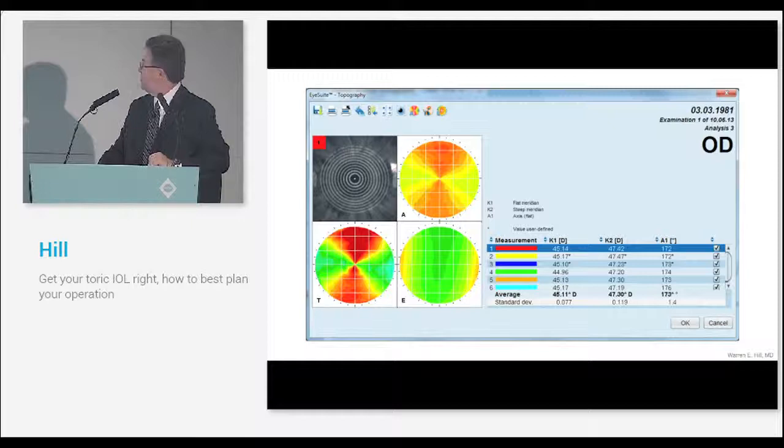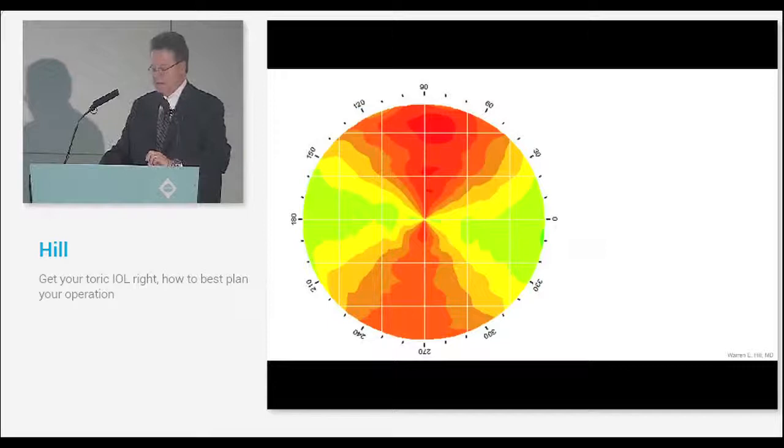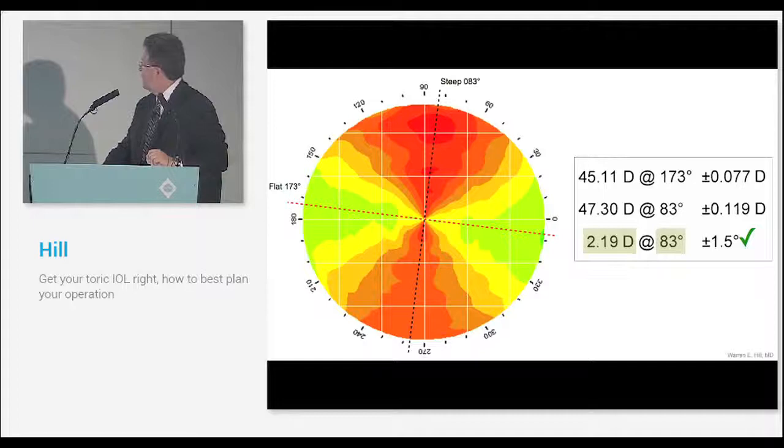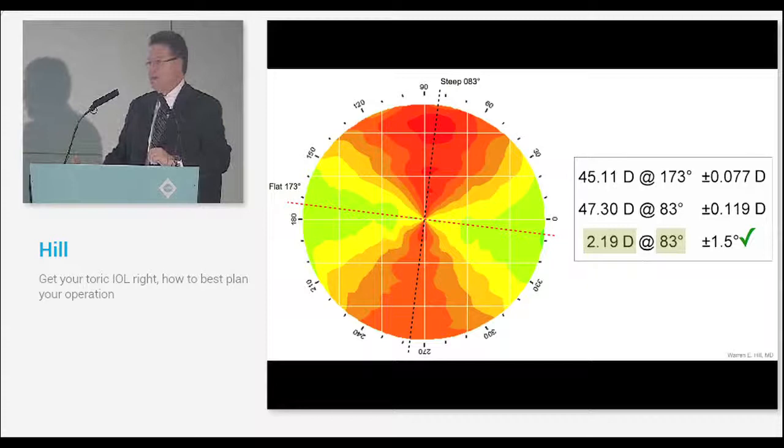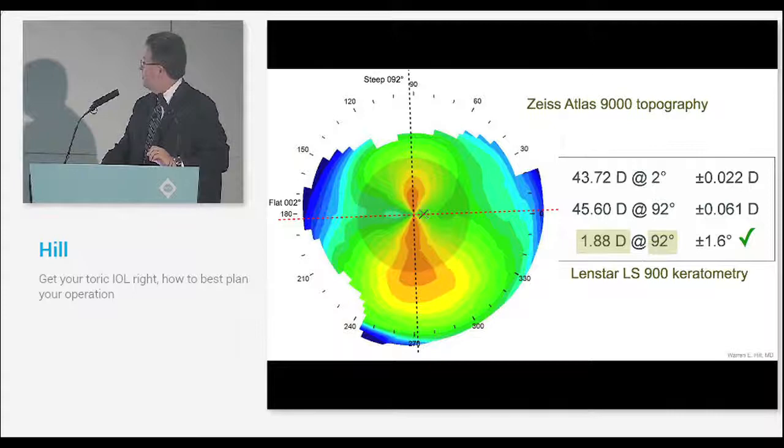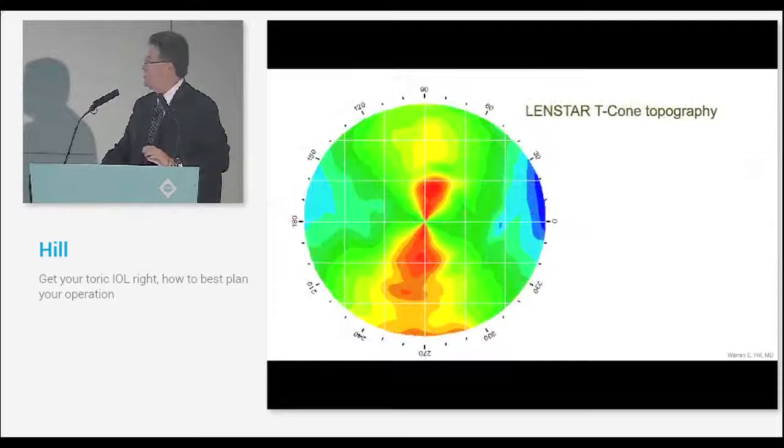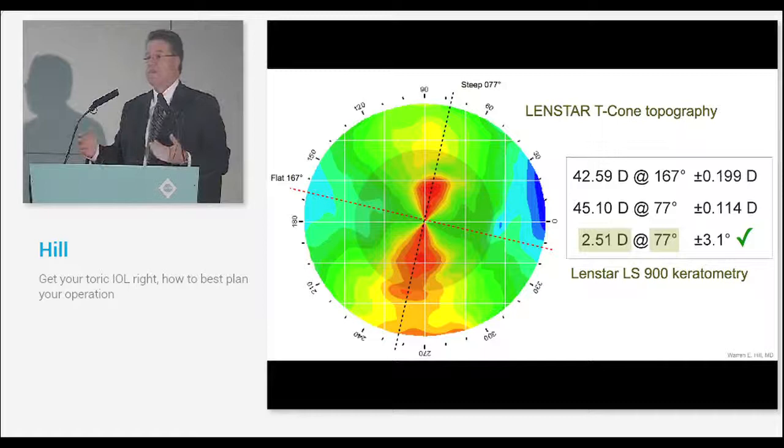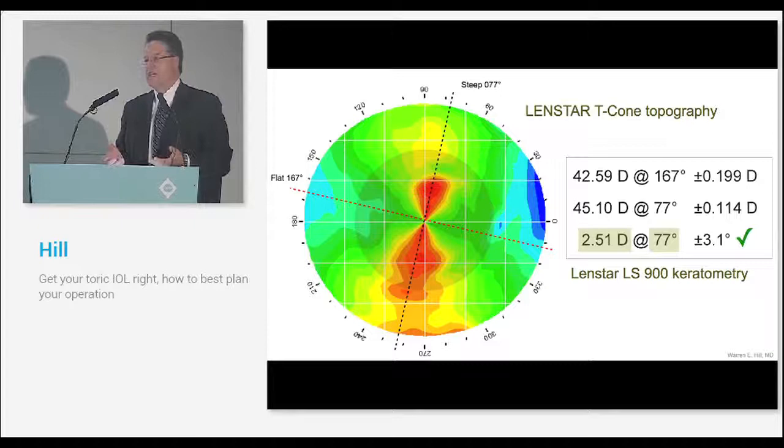There's the axial map, and then we just go through the exercise. Here's the axial map, there's the steep and the flat meridian. Here are our Ks. You can see that the steep meridian lines up with what we know to be true, what we've manually validated, so we know the Ks are going to be correct. Here's Zeiss Atlas topography, and there's our steep and flat meridian. There's our keratometry, and we validate it. Now let's see what it looks like with the T-Cone. There's a T-Cone patient. You notice it looks exactly the same. Basically what you now have on the LenStar biometer is the addition of a topographic map.